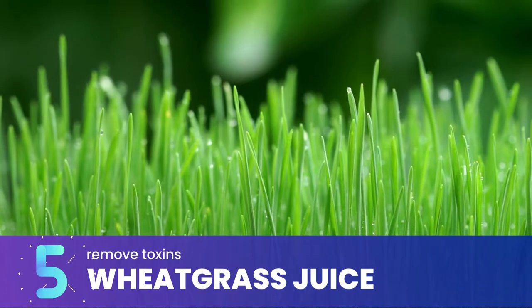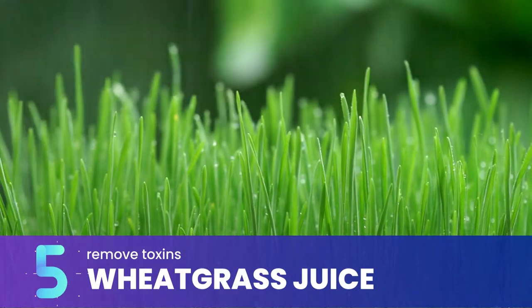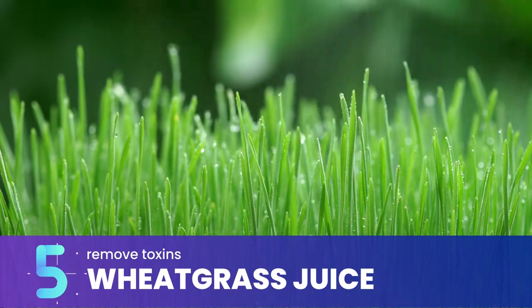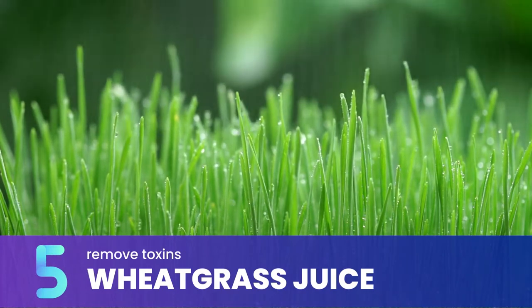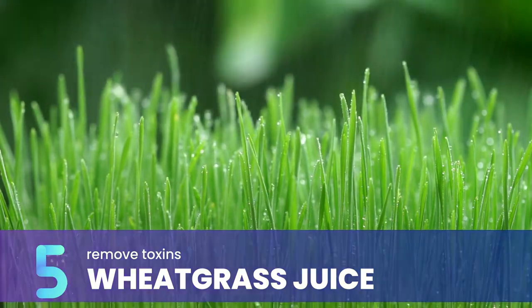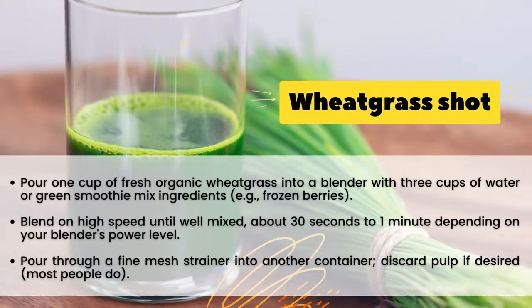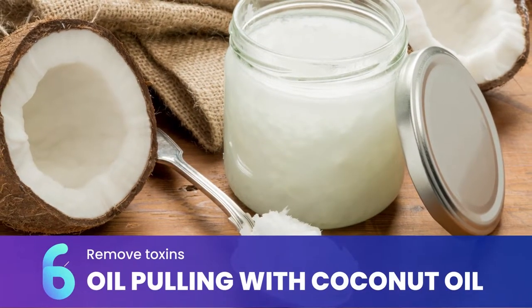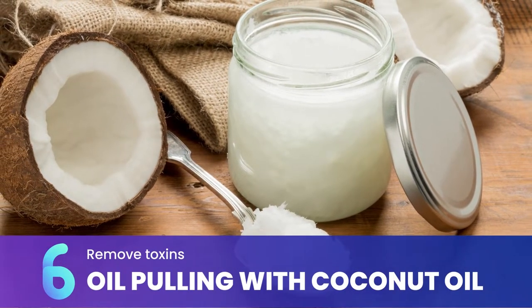Wheatgrass juice can be a powerful weapon in the fight against tooth decay. It's rich in chlorophyll, which is an effective natural tooth whitener. In addition to its anti-inflammatory properties, chlorophyll also works as a detoxifier and antibacterial agent that helps fight bacteria responsible for gum disease and cavities. To make your own wheatgrass shot at home, pour one cup of fresh organic wheatgrass into a blender with three cups of water or green smoothie mix, blend on high speed for about 30 seconds to one minute, then pour through a fine mesh strainer into another container.